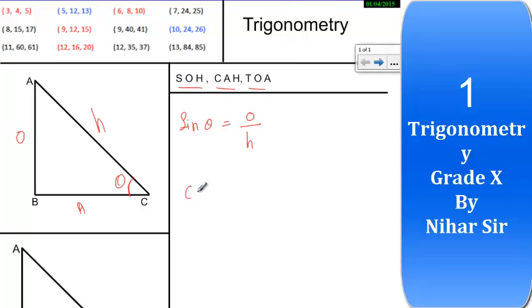Cos theta equals to adjacent upon hypotenuse. Tan theta equals to opposite upon adjacent.